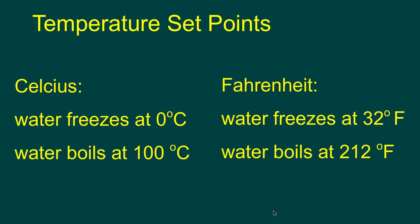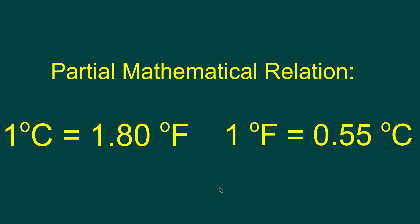Temperature scales have set points. For the Celsius set points, it's water freezing at zero and water boiling at 100. For Fahrenheit, water is freezing at 32, which we saw on the thermometer above, and water boils at 212.